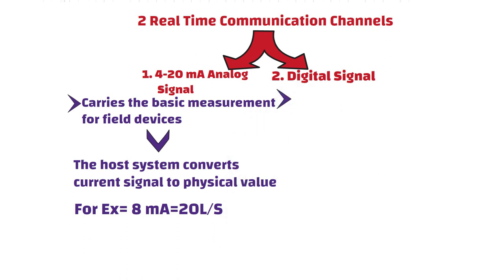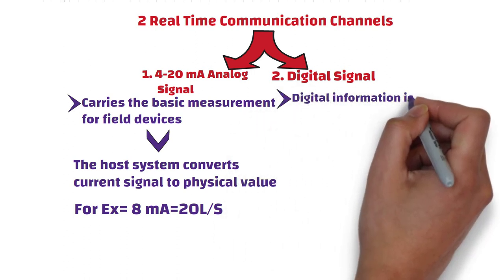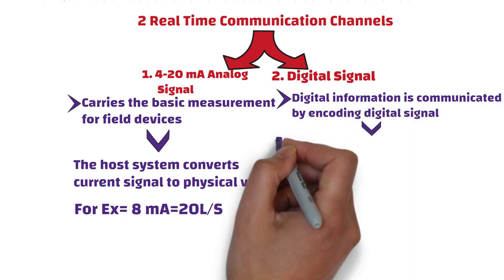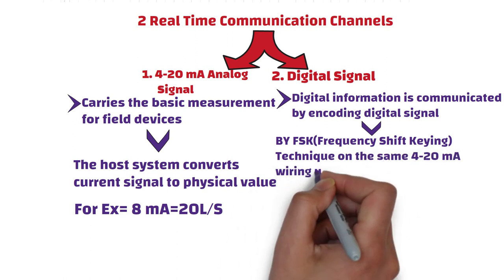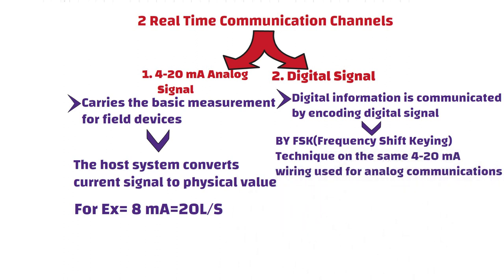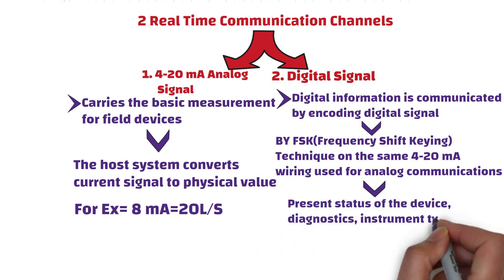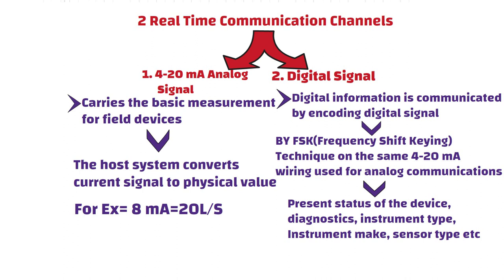On the other side, digital information is communicated by encoding digital signal. And this is done by using frequency shift keying technique on the same 4-20 mA wiring used for analog communications. The digital signal provides different types of information about the instruments, such as present status of the device, diagnostics, instrument type, instrument make, sensor type, model number, etc.